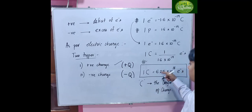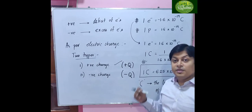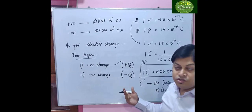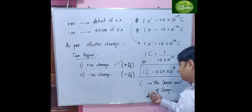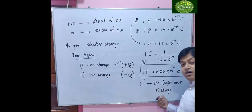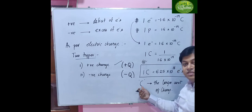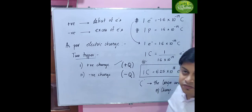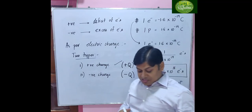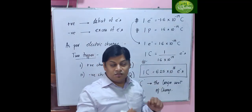In one coulomb, there are 6.25 × 10¹⁸ electrons — that is a huge number. So charge cannot be considered a smaller unit; rather it will be considered as a larger unit of charge. This is all about charge.